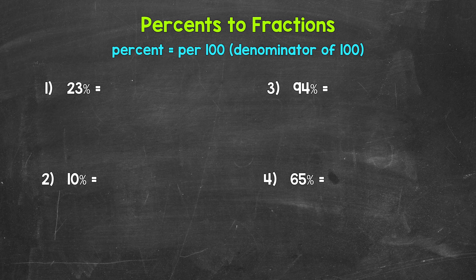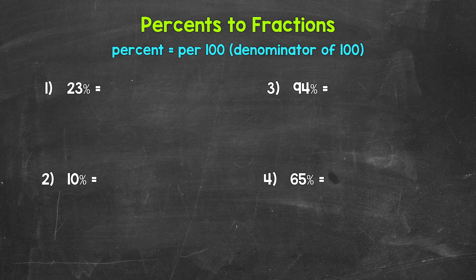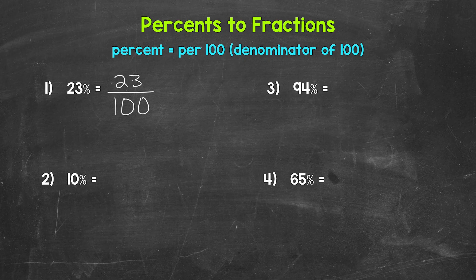Once we have the fraction, we can simplify if possible. So for 23%, we write this as 23 over 100, 23 hundredths. And that's it, that's our fraction.